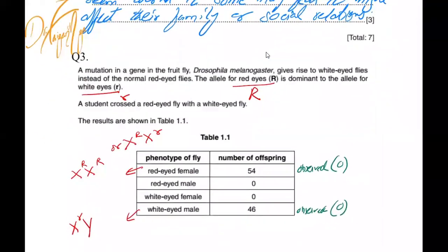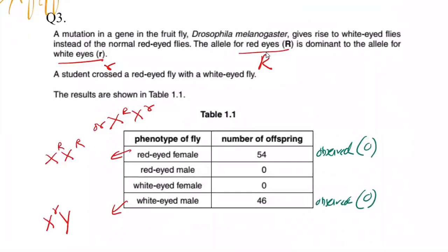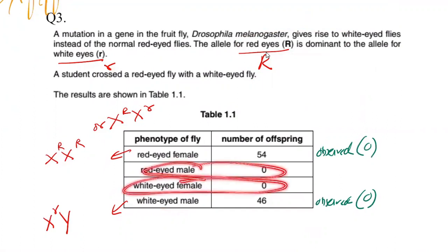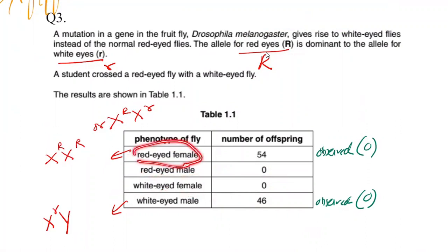Moving to the next question: a mutation in the gene of a fruit fly gives rise to white-eyed flies instead of the normal red-eyed flies. The allele for red eyes is dominant to the allele for white eyes, so we use capital R and small r respectively. From the data, red-eyed males are zero and white-eyed females are zero, with values of 54 and 46 for red-eyed female and white-eyed male respectively. Since the opposite gender lacks the other phenotype entirely, this indicates sex linkage.